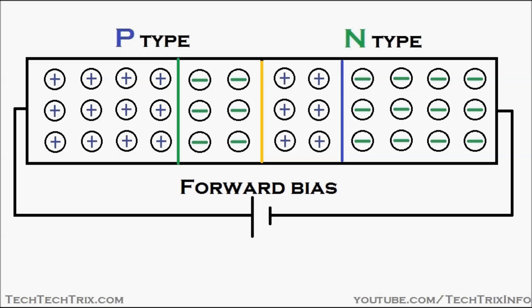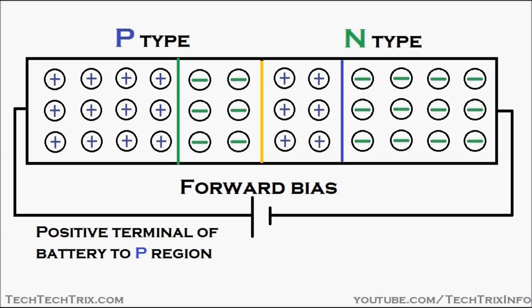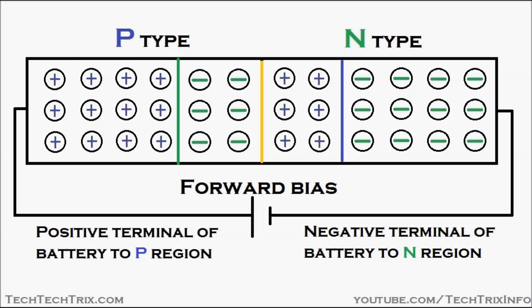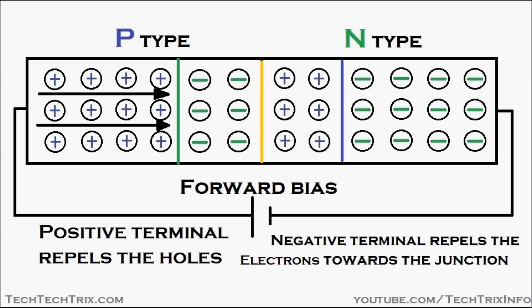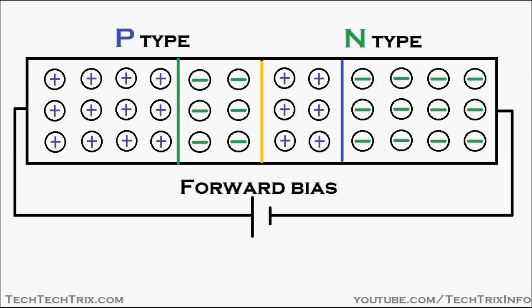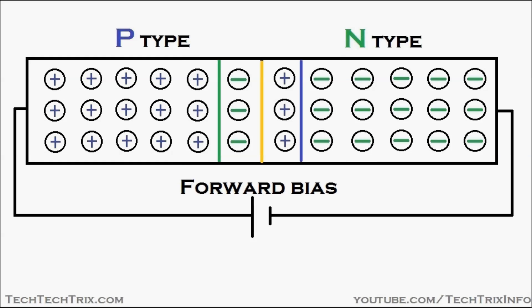In forward biasing, the positive terminal of the battery is connected towards the P region of the PN junction, and the negative terminal of the battery is connected to the N region. The positive terminal repels the holes in the P region and the negative terminal repels the electrons towards the junction in the N region. A pressure is acting towards the junction, resulting in the junction shrinking.